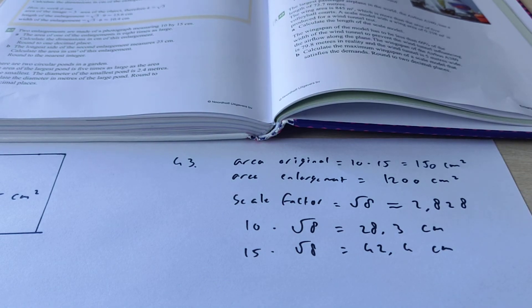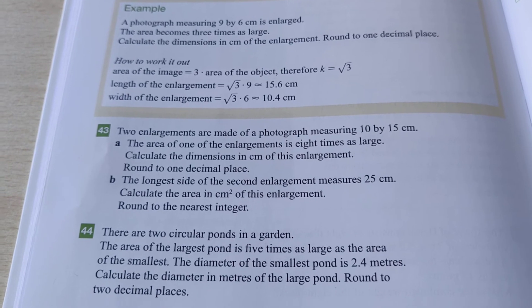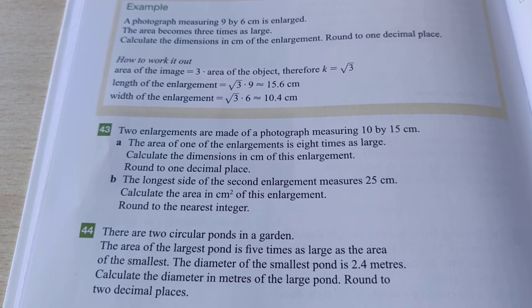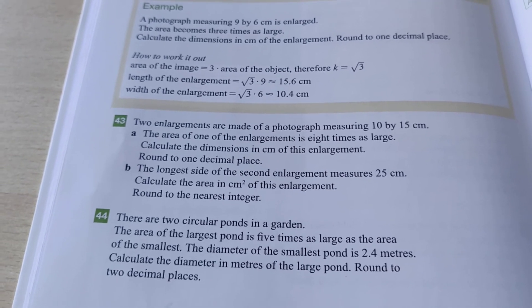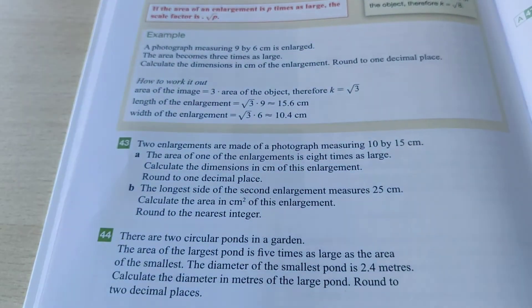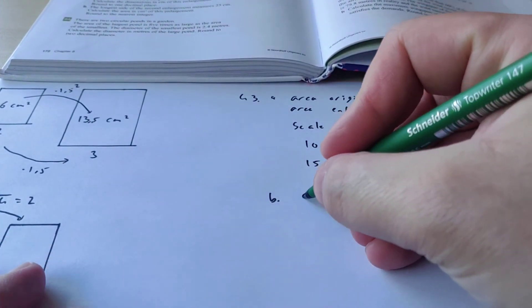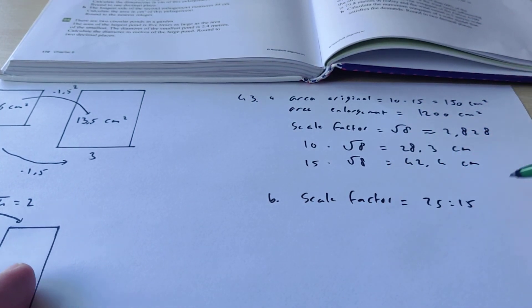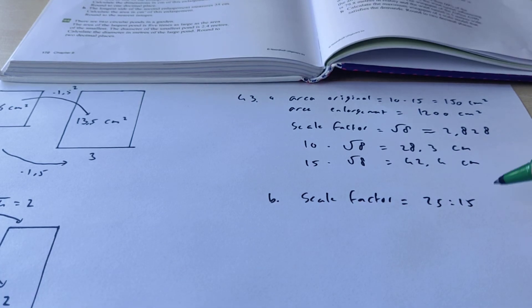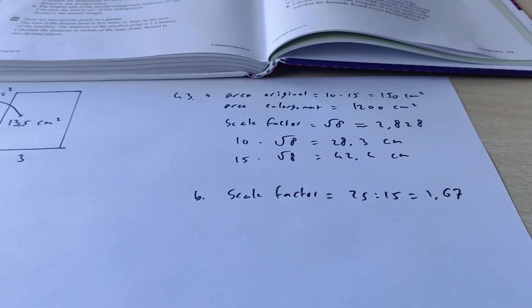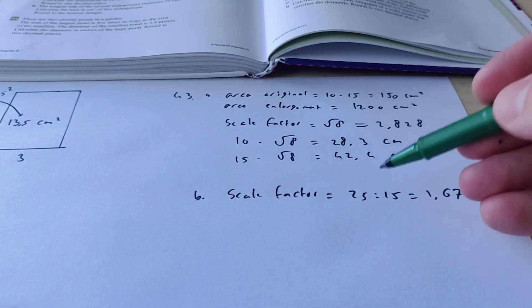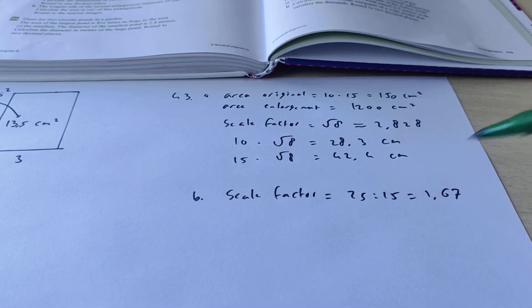So those are the measurements of the enlargement — that's exercise A. Now let's go to exercise B. Exercise B says: the longest side of the second enlargement measures 25 centimeters. Calculate the area in squared centimeters of this enlargement, rounded off to the nearest integer. The longest side in the original is 15, and the longest side in this enlargement is 25. So we figure out the scale factor: 25 divided by 15 is 1.67. You see the difference here — when we know two lengths, we just divide them to get the scale factor.